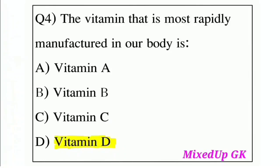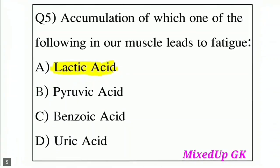Option A: Vitamin A, Option B: Vitamin B, Option C: Vitamin C, Option D: Vitamin D. The correct answer is Option D: Vitamin D. Question 5: Accumulation of which of the following in our muscles leads to fatigue? Option A: Lactic acid, Option B: Pyruvic acid. The correct answer is Option A: Lactic acid.